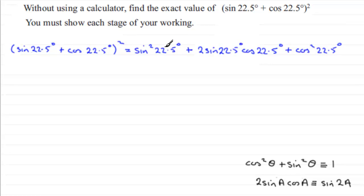So sin² of an angle plus cos² of an angle comes to 1. So we just put that this is equal to 1. And then for this part, this is going to be sine of twice our angle. So it's going to be sine of two lots of 22.5°, which is sin 45°.